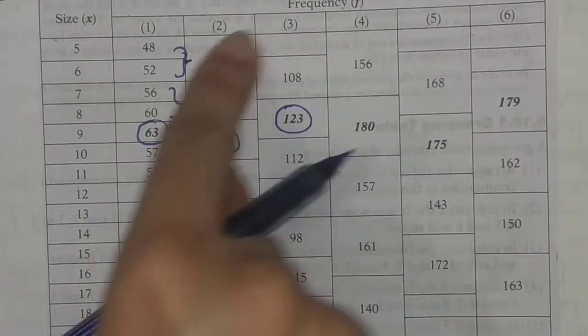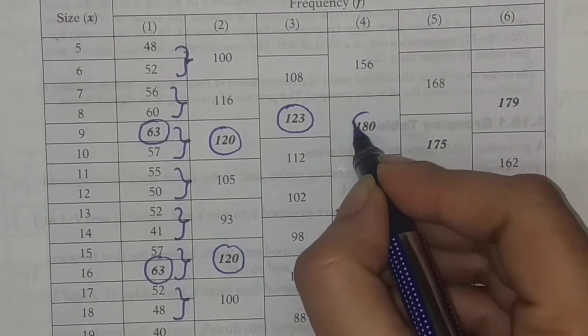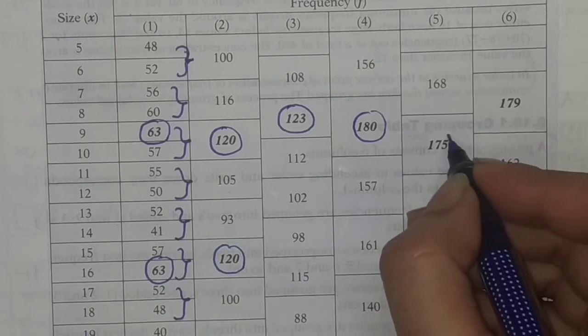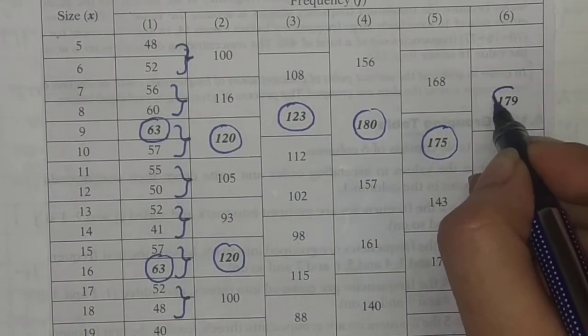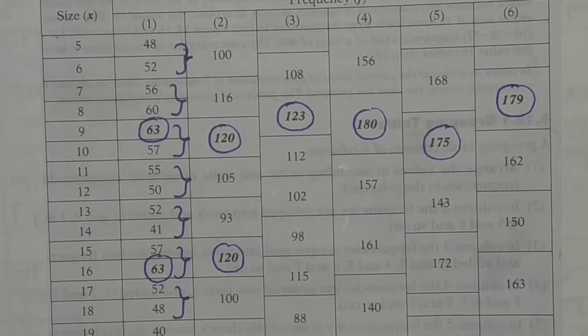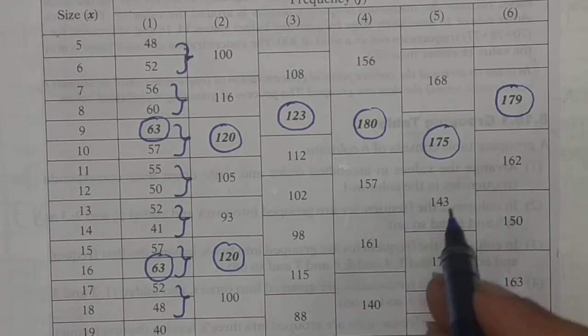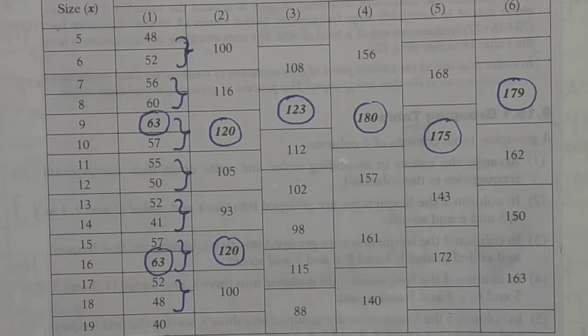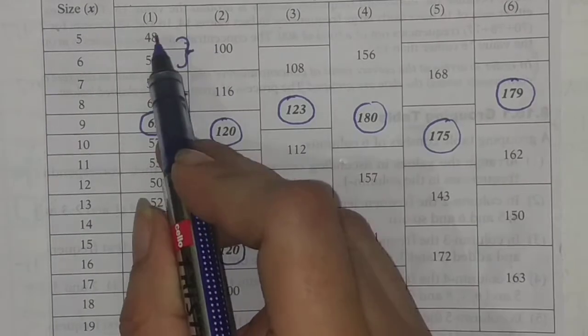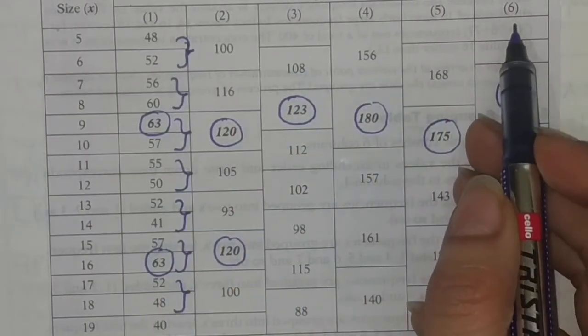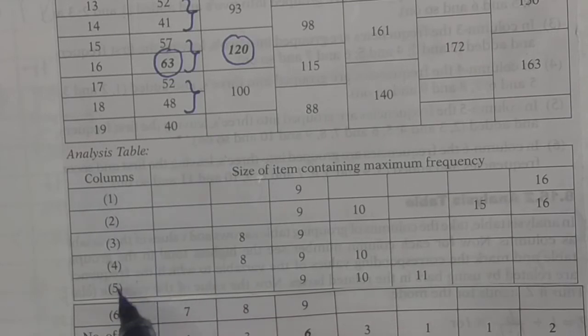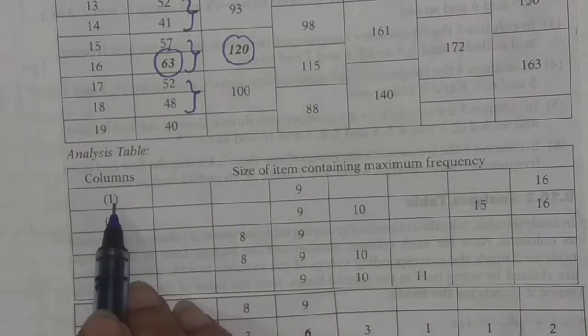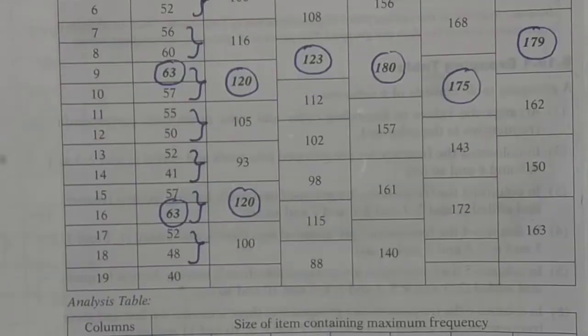That is how the grouping table is made. Now we look at the fourth column for the highest number: 180 is the highest. Fifth column, 175 is the highest. Sixth column, 179 is the highest. Now I have to circle them. The highest numbers will be circled in each column.